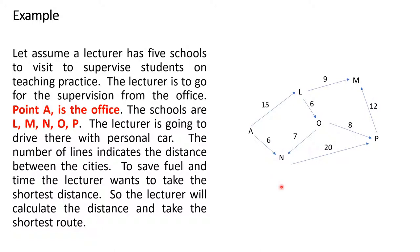The technique of choosing the shortest route is called linear programming, and the objective of the lecturer is to supervise the students within the given time. The process of choosing the best routes is operation research. Operation research is an approach to decision making which involves a set of methods to operate a system. In this example, the system was the supervision model.